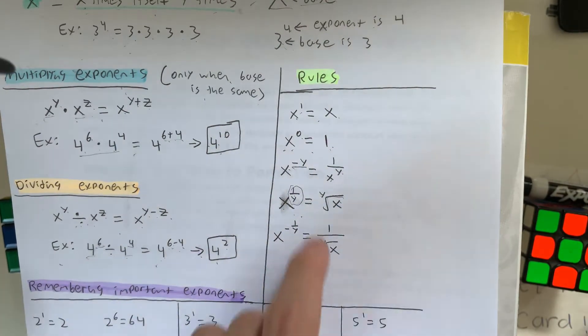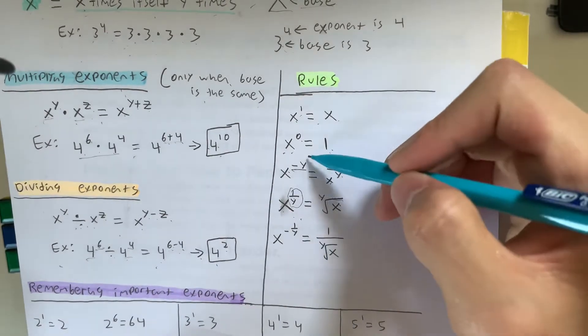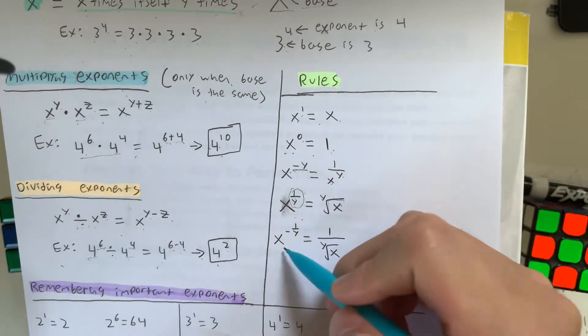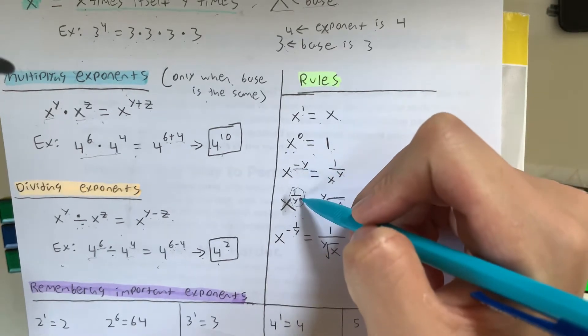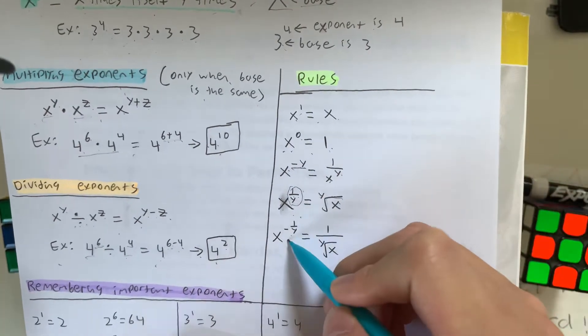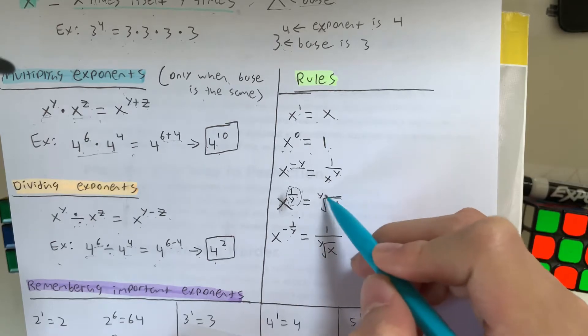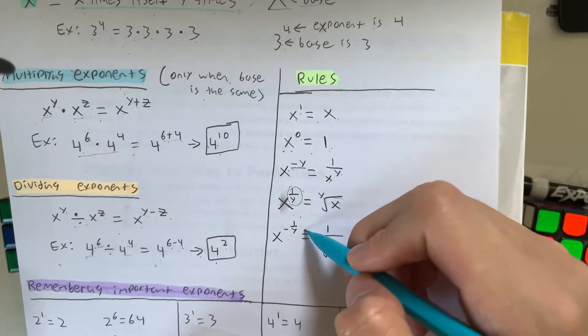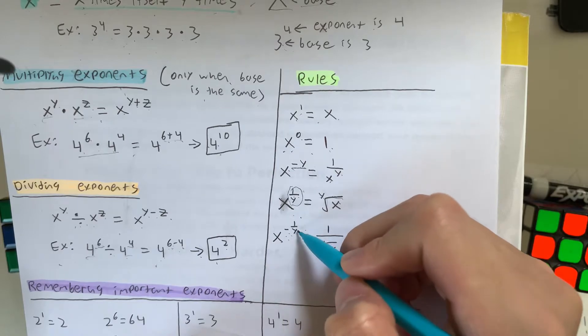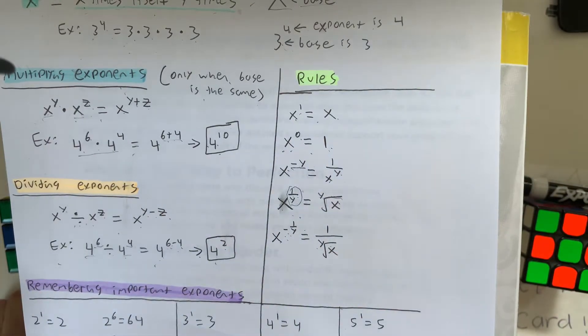So that's what the fraction means. So don't confuse these two, because they're not the same thing. But now, what if you combine the negative and the fraction? It's equal to 1 over x root y. So that's what happens when you go x to the negative 1 over y.